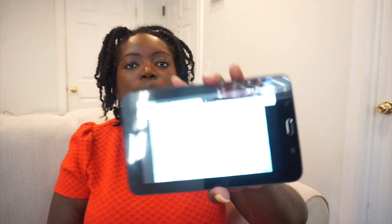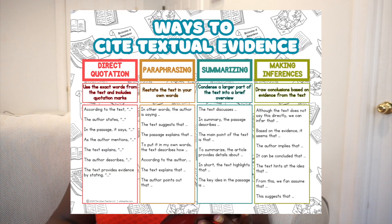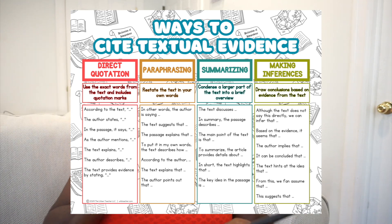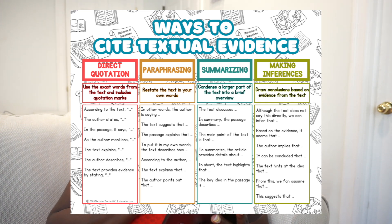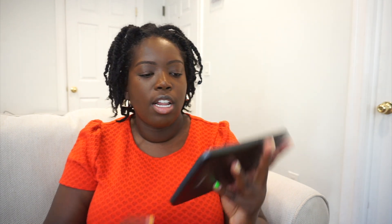I showed students the two citation methods covered so far — direct quotation and paraphrasing — and explained that this year we're going to do four different ways to cite textual evidence: direct quotation, paraphrasing, summarizing, and making inferences. I have a poster with all four on it, plus individual posters for each, which I love and plan to add to my TPT store soon. It's a beautiful, simple anchor chart. Students then read the article and used the stems to cite textual evidence, this time choosing between direct quotation and paraphrasing.